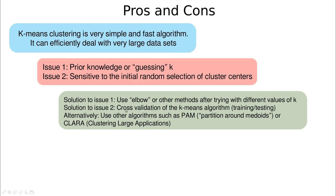Solutions: first, use the elbow method, meta methods, or the silhouette method to estimate k — though this requires trying different values of k and comparing, which is computationally expensive. For the sensitivity problem, use cross-validation by trying different centroid initializations. An alternative is to use partition around medoids (PAM), where the medoid is an actual data point near the center of each group rather than any arbitrary point in space. An extension called CLARA (Clustering Large Applications) applies PAM to big datasets where trial-and-error is too costly due to long processing times.